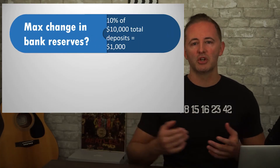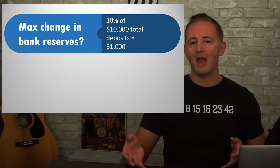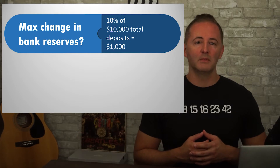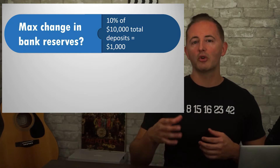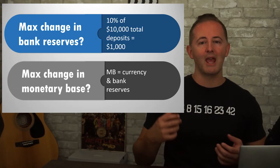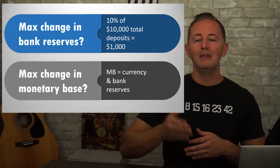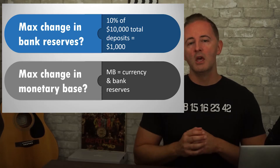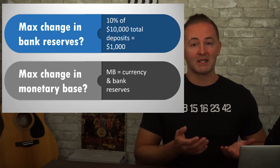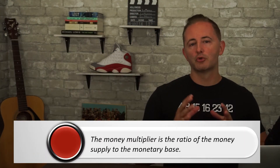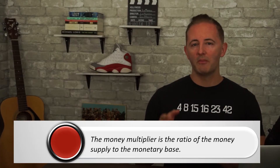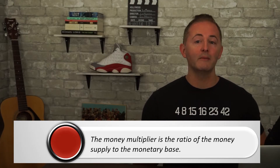This multiplier can be used in a lot of different ways on test questions, so be very careful using it. A question could also ask you about the maximum change in bank reserves: take 10% of $10,000 to get $1,000 as the total amount of required reserves. You could also be asked about the total change in the monetary base. The monetary base includes currency and bank reserves. Since we assume all money gets redeposited into banks, currency is zero, so the question is really just asking about bank reserves. The money multiplier is the ratio of the money supply to the monetary base, so the monetary base times the multiplier will always equal the money supply.